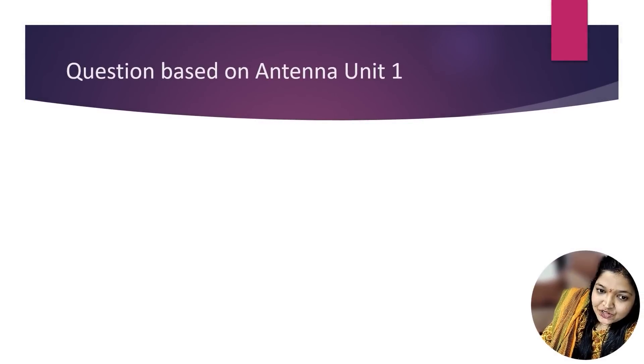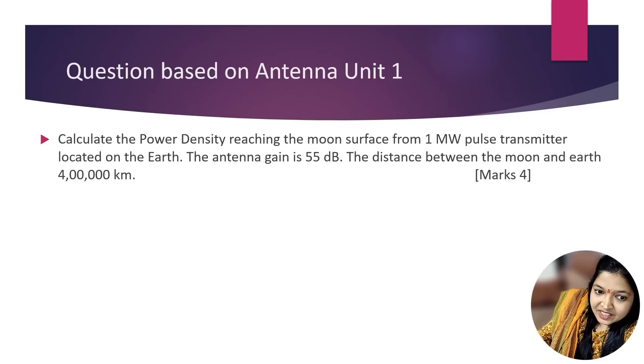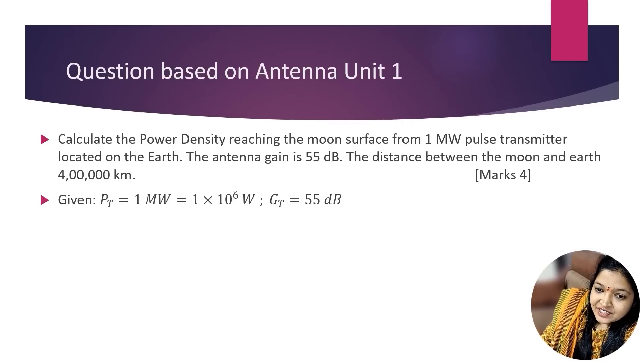The first question is based on antenna unit 1. In this numerical, we have to calculate power density reaching the moon surface from a 1 MW pulse transmitter located on Earth. The given data is: transmitted power Pt = 1 MW = 1 × 10^6 W, antenna gain Gt = 55 dB, and the distance between the moon and earth is 400,000 km. This numerical is for 4 marks.